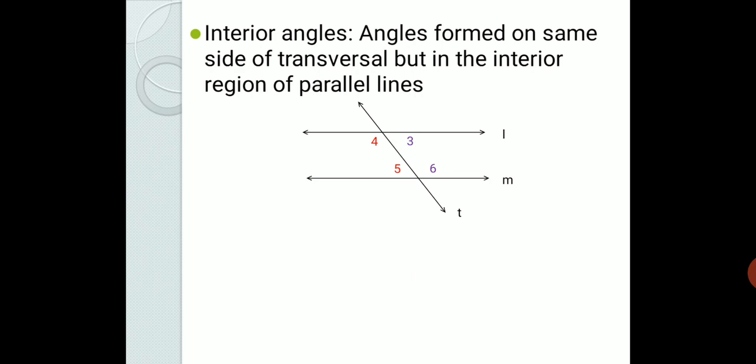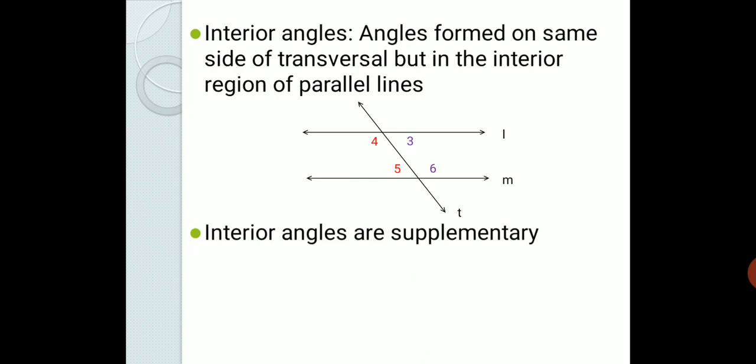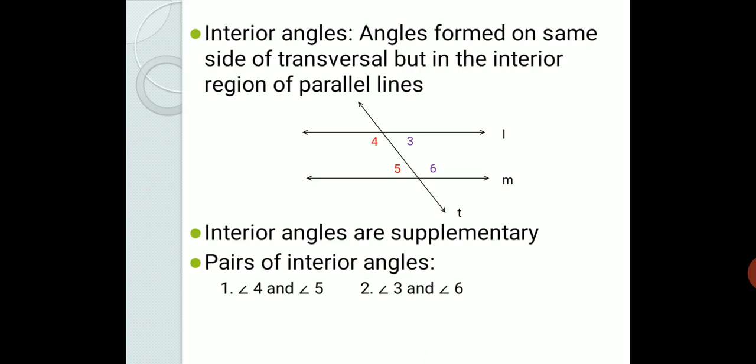The very important property to remember about interior angles is that interior angles are supplementary — that means the addition of these two angles is 180 degrees. The pairs of interior angles are angle 4 and angle 5, and angle 3 and angle 6. So, angle 4 plus angle 5 equals 180 degrees, and angle 3 plus angle 6 also equals 180 degrees.